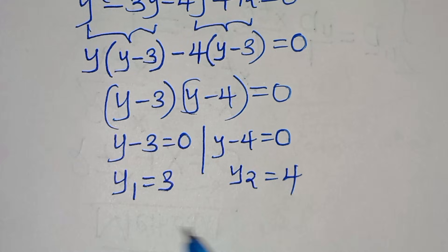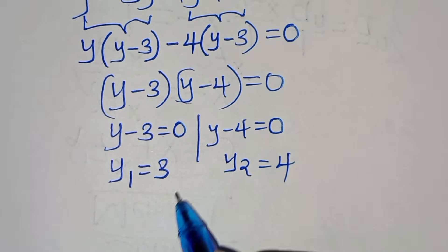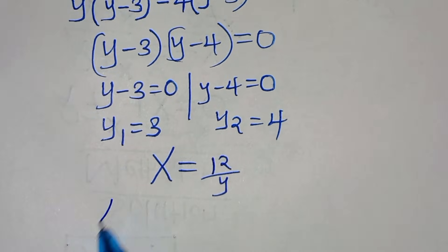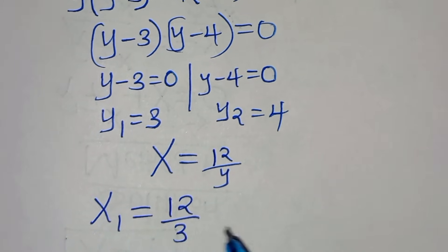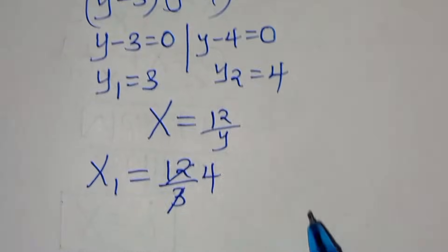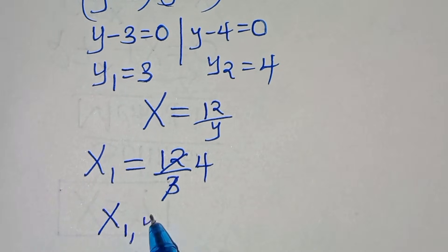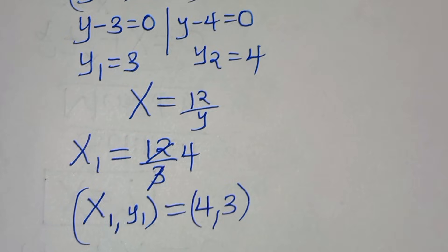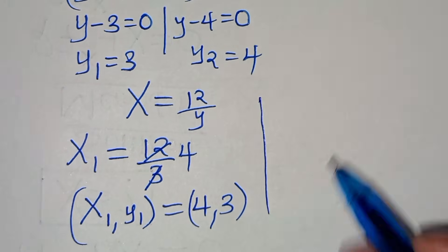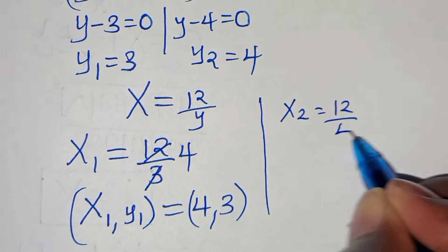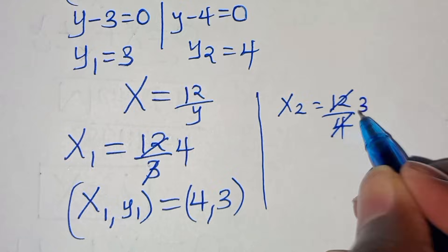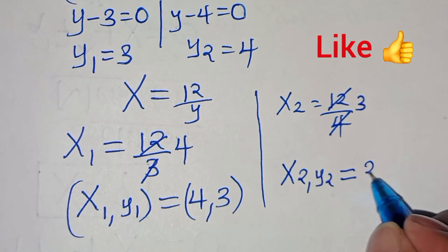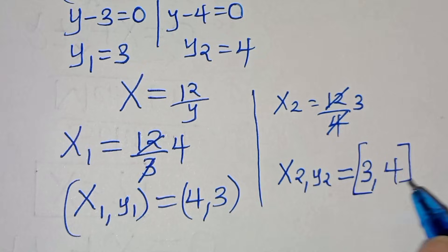Solving for corresponding x values using x = 12/y: x₁ = 12/3 = 4, giving the first solution set (x₁, y₁) = (4, 3). Then x₂ = 12/4 = 3, giving the second solution set (x₂, y₂) = (3, 4).